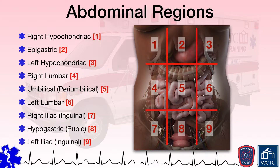For what it's worth, hypochondriac is derived from the Greek words hypo and chondros for under-cartilage, referring to the cartilage of the ribs. Epigastric is from the Greek epi and gaster for above the stomach. We covered lumbar in a previous module, which refers to the lumbar area of the back or flank, and the right or left adjective should be self-evident.